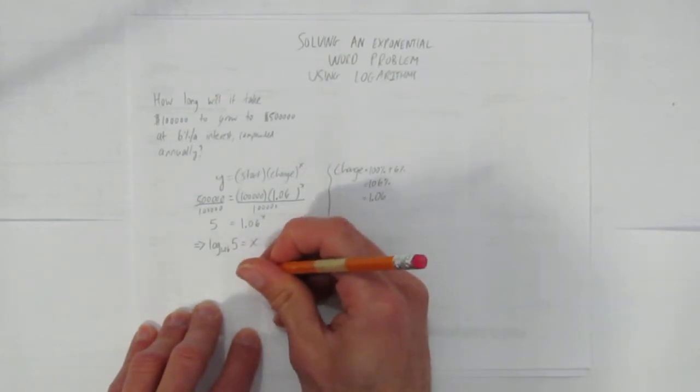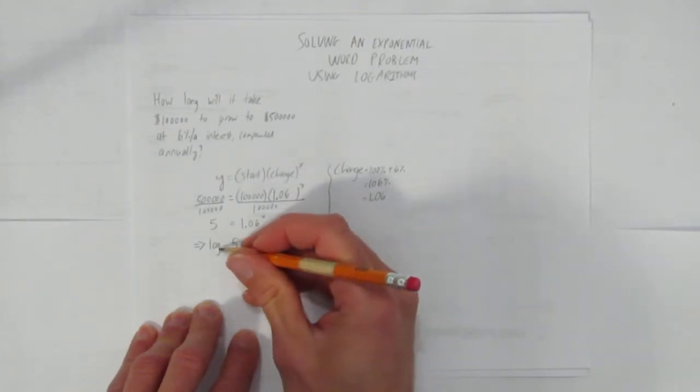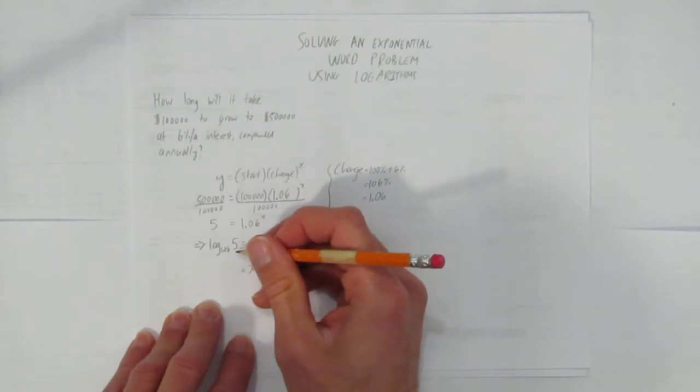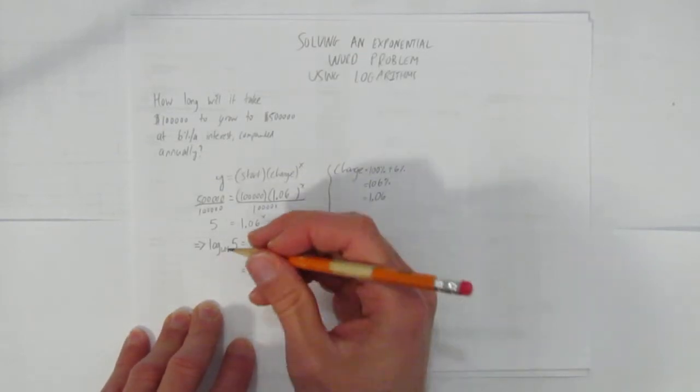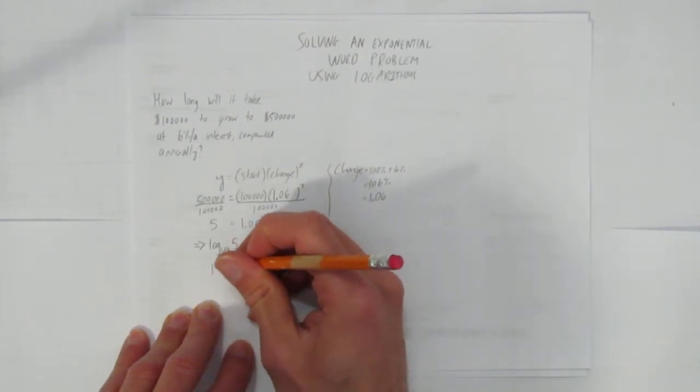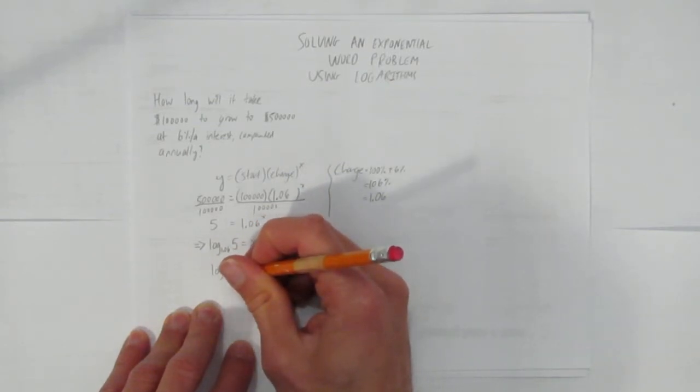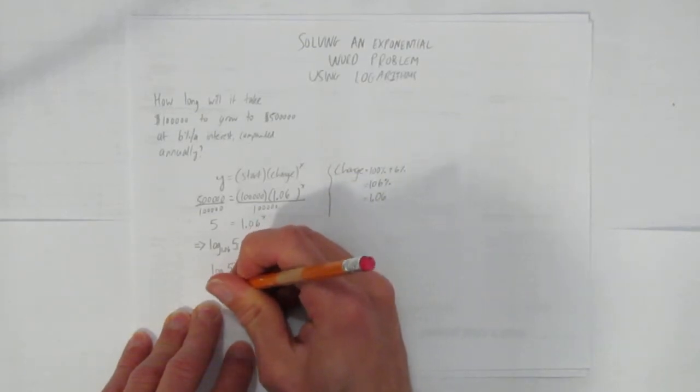And now we'll use what I sometimes call rule 9, which is you can change this to any base of any logarithm. We'll change it to base 10, because that's what the calculator uses. We'll change this to log base 10 of 5, and I wrote nothing because if there's no base here, it means base 10, over the log of 1.06.